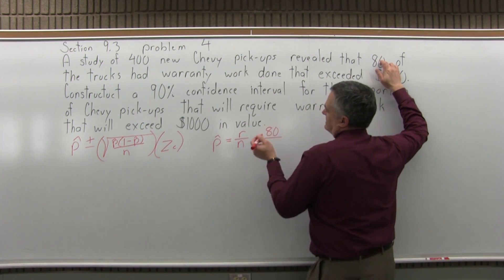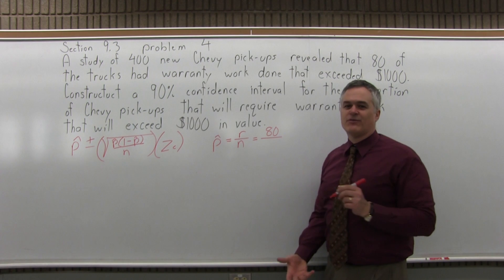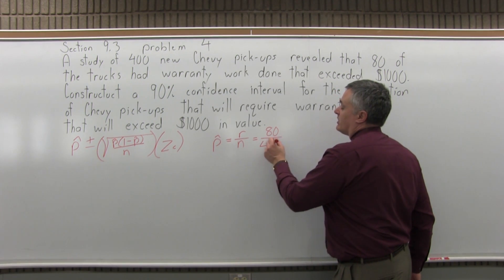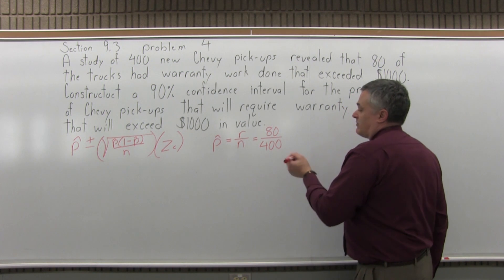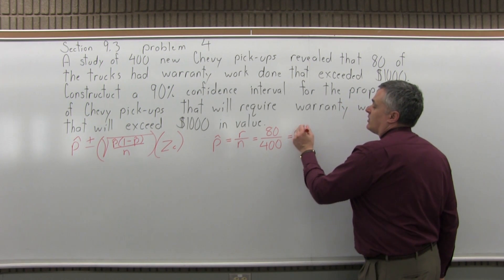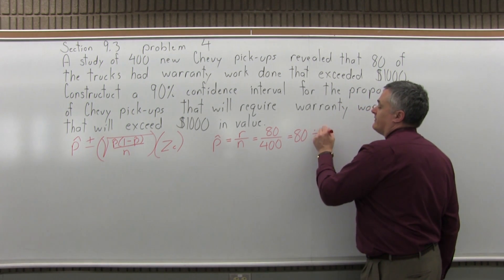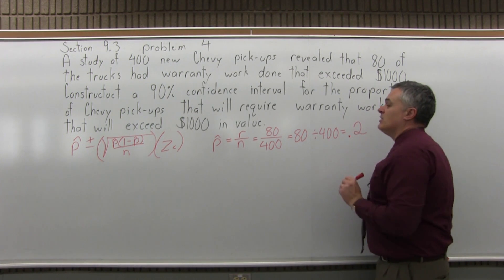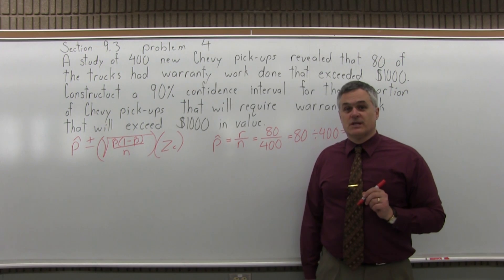But there's a case where you'd rather not succeed. It means your new truck doesn't have to have warranty work. But there were 80 that needed the warranty work out of 400 altogether. So let's make that into a decimal. So with your calculator, you can do 80 divided by 400 equals. And the calculator will tell you that it is 0.2. So that's p-hat.